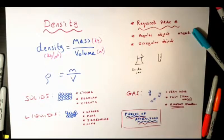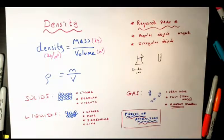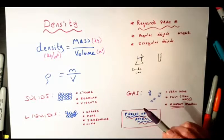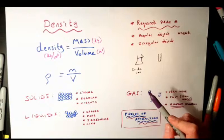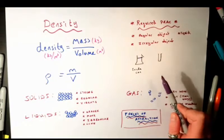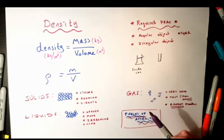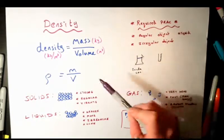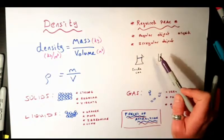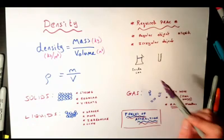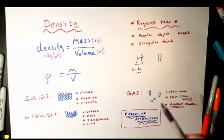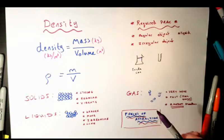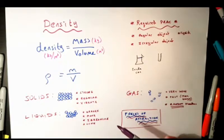Now let's look at the required practical — this is one you have to learn. It was on the 2018 summer exam paper, so it's quite an important one. Even if you haven't done your revision, if you think of the formula density equals mass over volume, you can work out where to start.